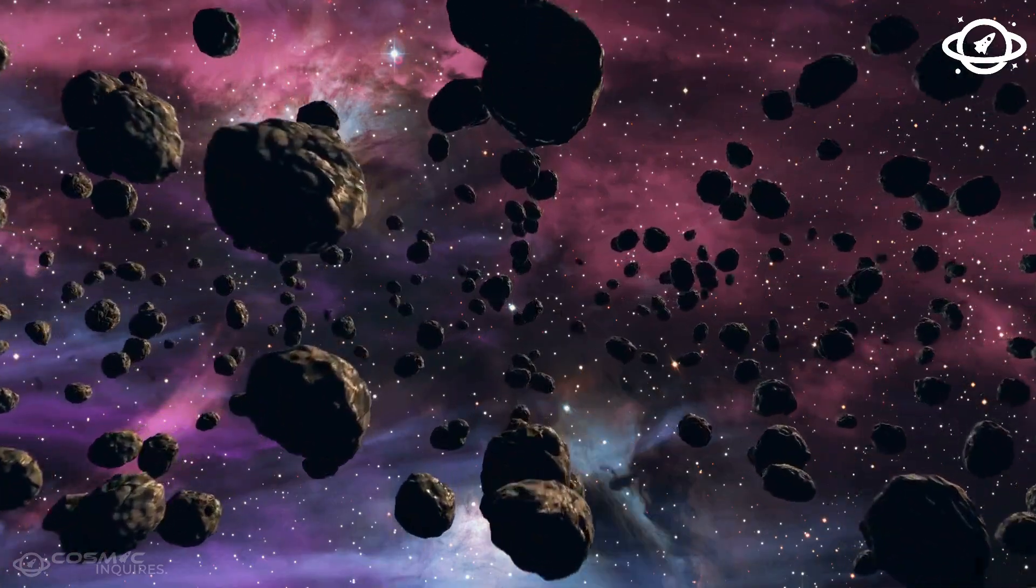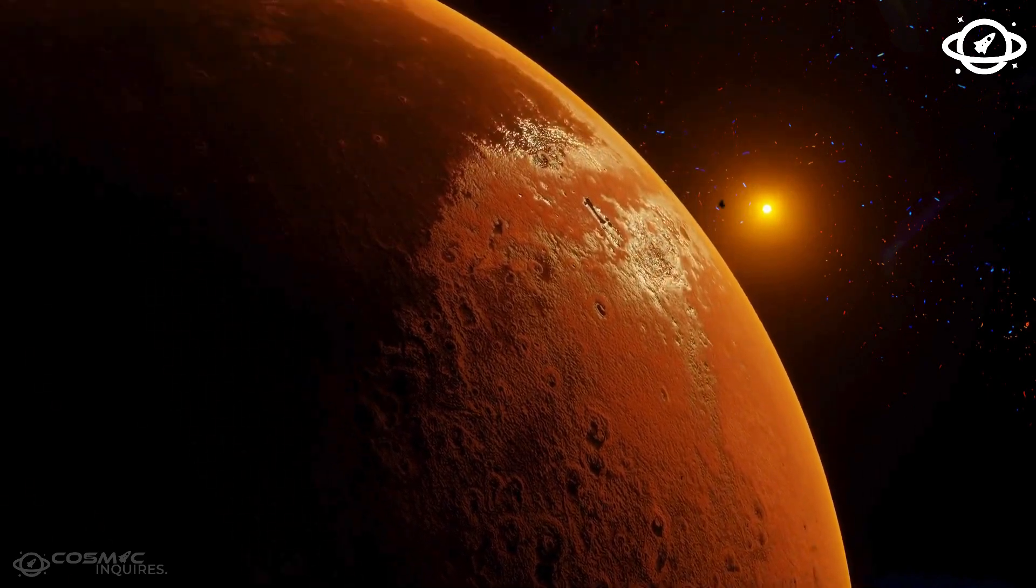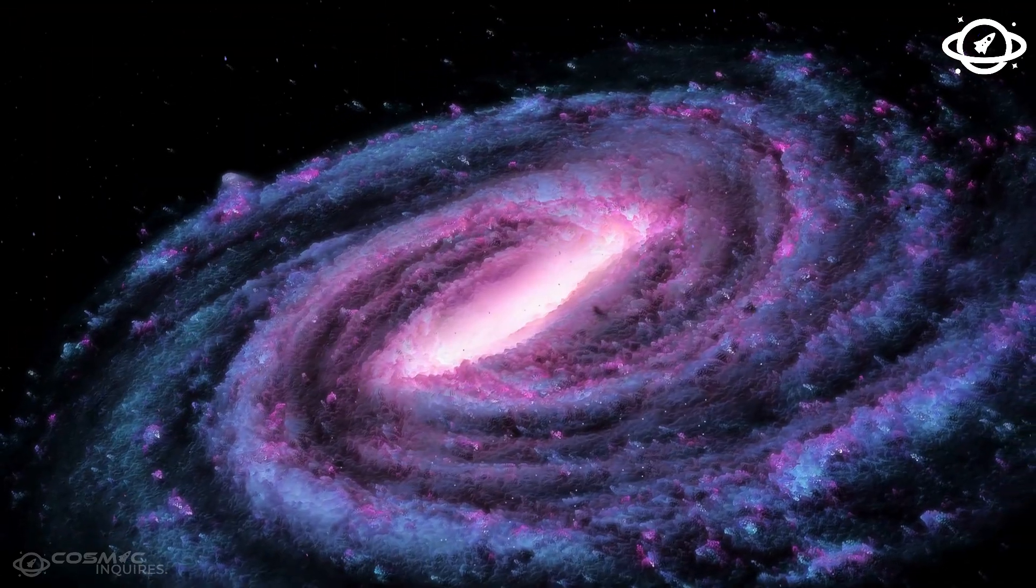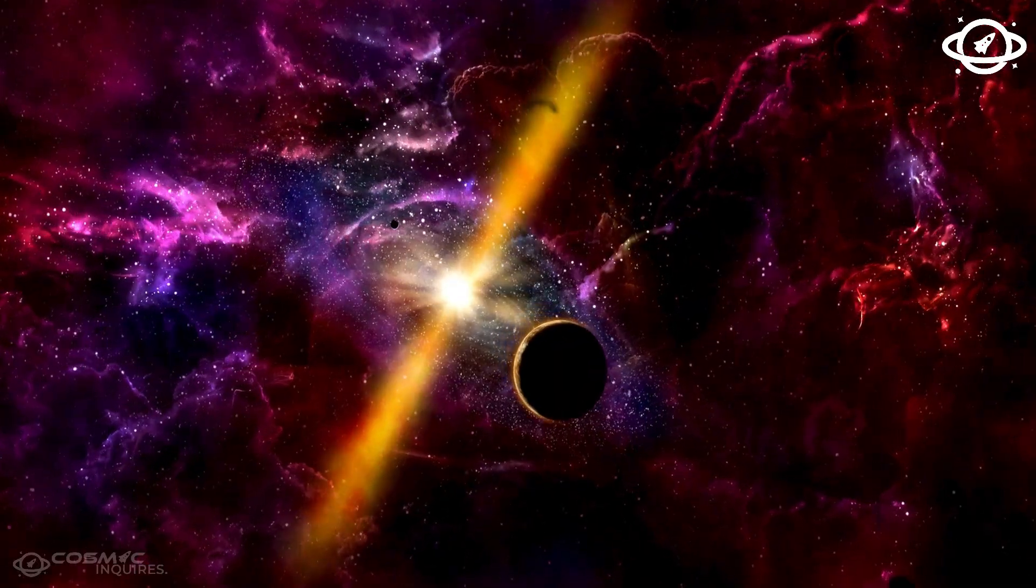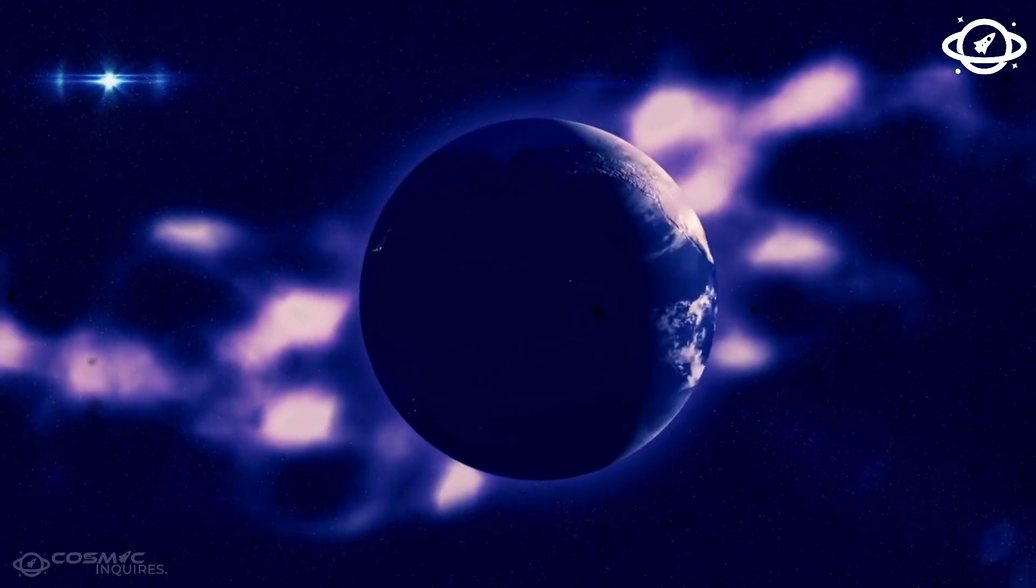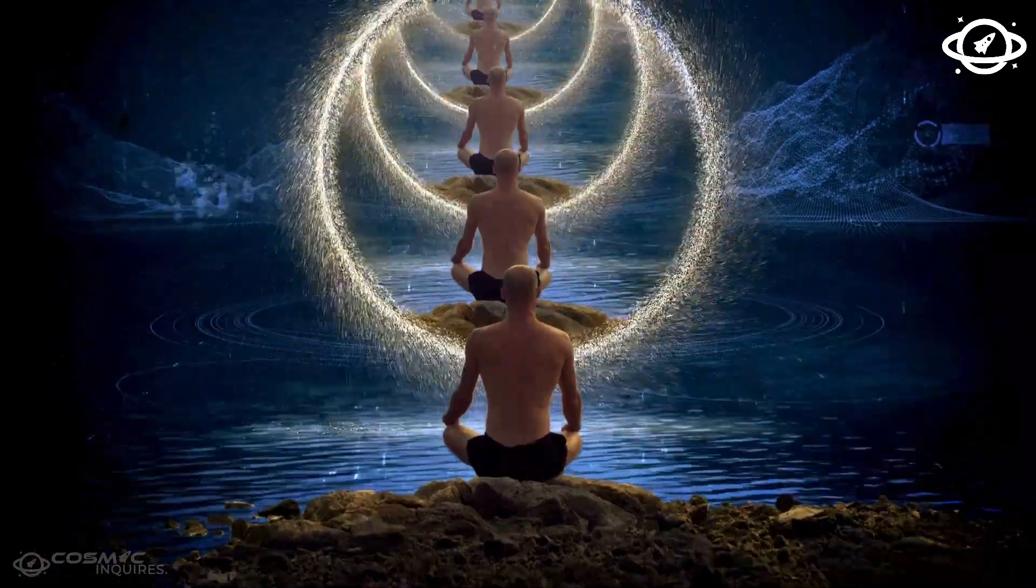Nothing in the ring system should remain still. Everything orbits. Everything drifts. But this anomaly didn't. It sat there, motionless, as if observing. Several passes confirmed its presence. Then, within a week, it disappeared. Not moved. Vanished. Not into the planet. Not into space. Simply gone.